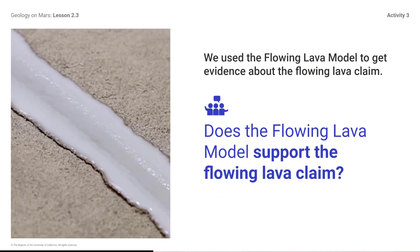We use the Flowing Lava Model to get evidence about the Flowing Lava Claim. Does the Flowing Lava Model support the Flowing Lava Claim? Some of you might think that the Flowing Lava Model supports the Flowing Lava Claim simply because the flowing wax did form a channel. Others might think that the channel formed by the wax does not look similar enough to the channel on Mars to support the Flowing Lava Claim. At this point, both responses are acceptable.